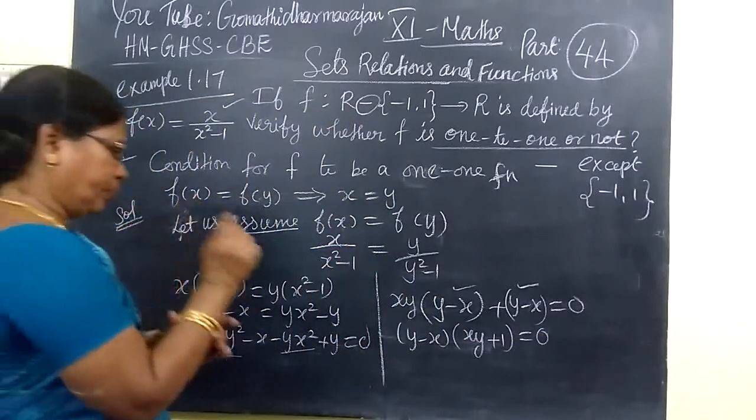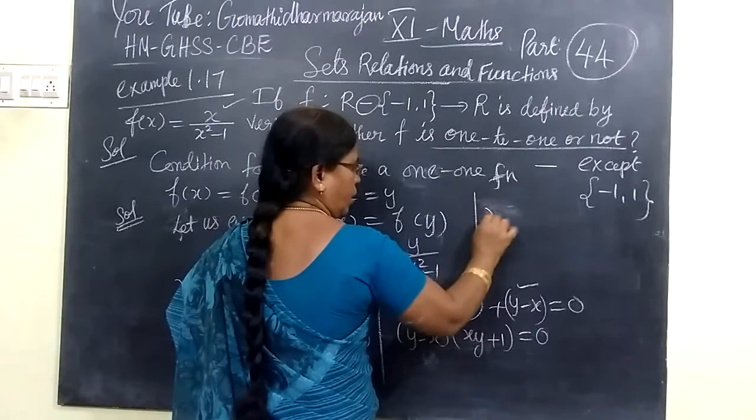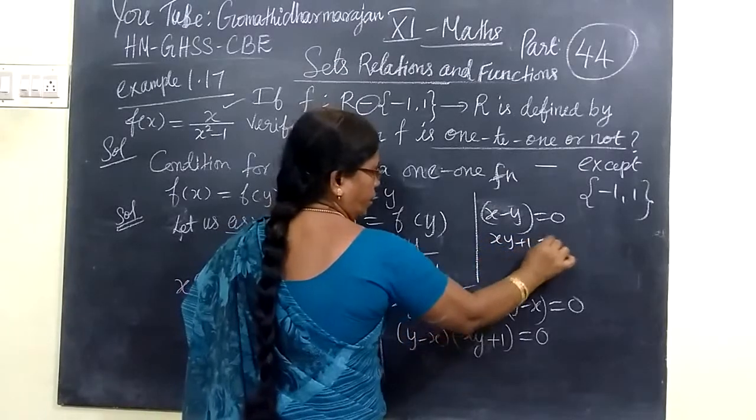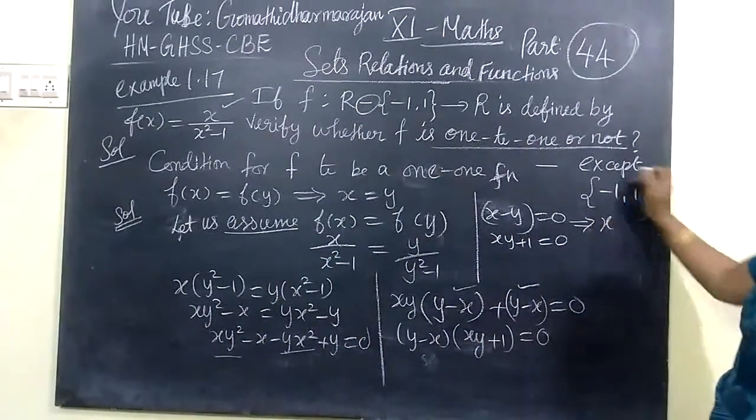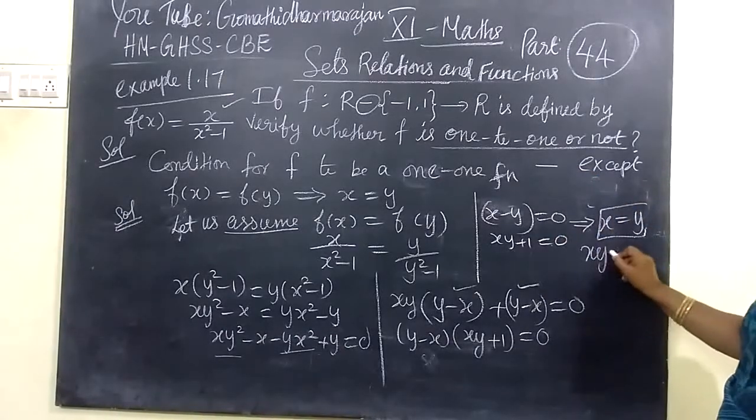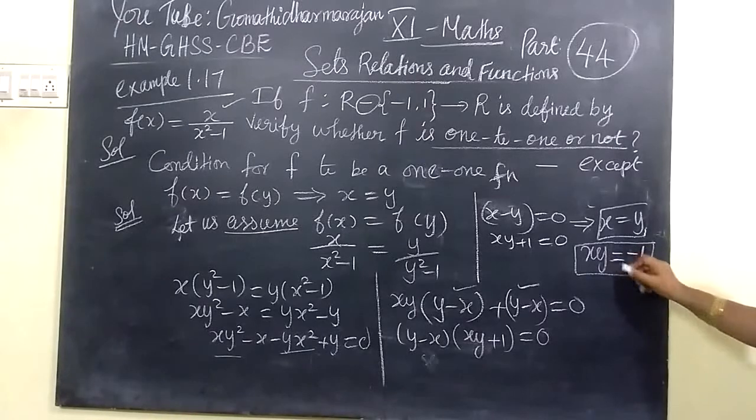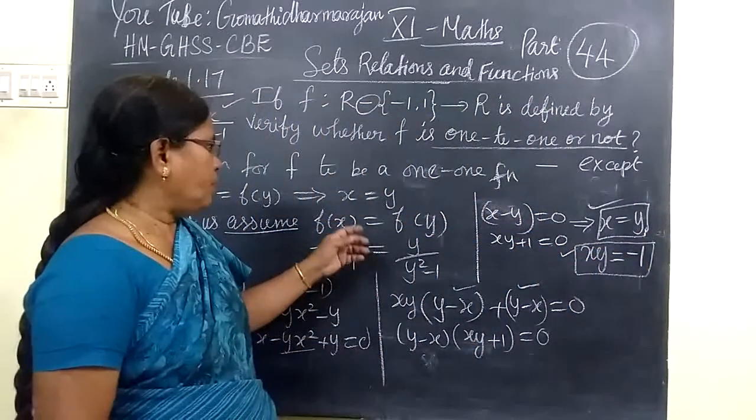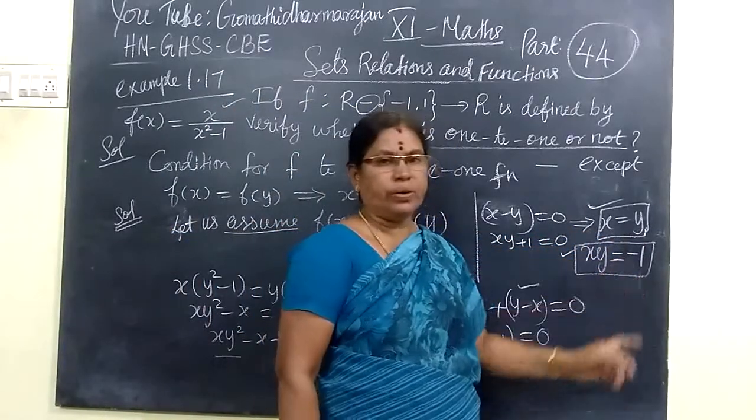This implies x₂ equals x₁, or x₁x₂ + 1 equals 0. You can write x₂ - x₁ = 0 implies x₁ = x₂, or x₁x₂ + 1 = 0 implies x = ±1, which are not in the domain.